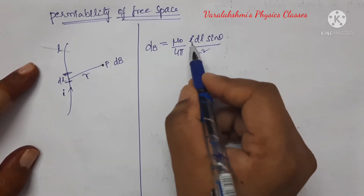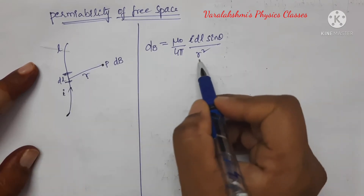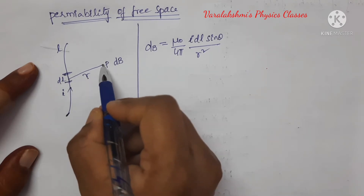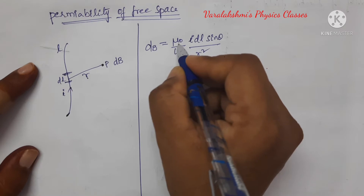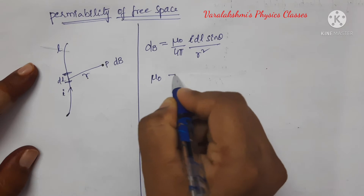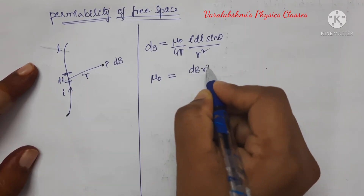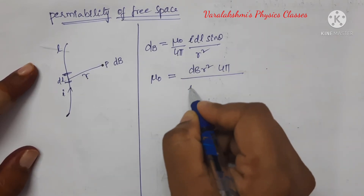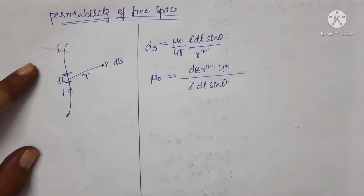Here, I is the current through this conductor, DL is the small length we have considered, and R is the distance between the current carrying conductor and the point. μ₀ is the permeability of free space, and we have to find its dimensions. Bringing μ₀ to one side, the remaining terms give: μ₀ = (dB × R² × 4π) / (I × DL × sinθ).